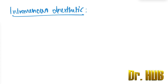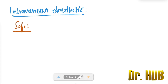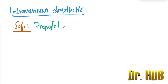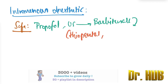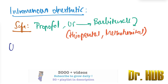Now we are looking at the intravenous anesthetics. Under IV anesthetics, the safe category includes propofol and ultra-short acting barbiturates. Examples of ultra-short acting barbiturates include thiopental and methohexital.